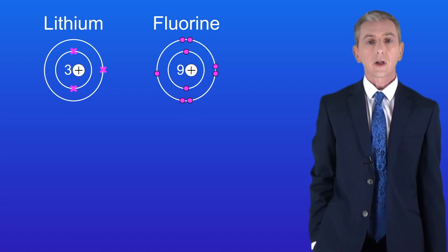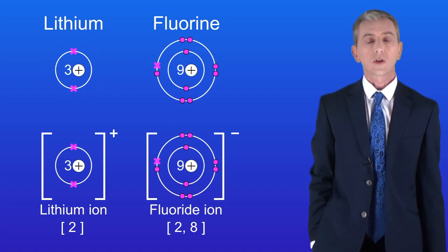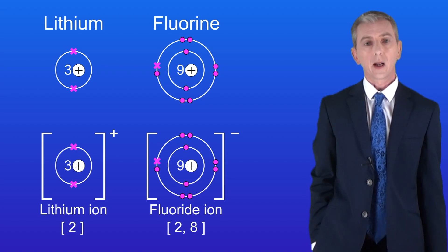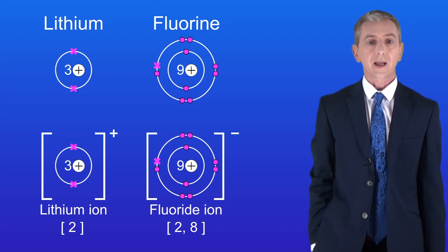We saw that the electron in the outer energy level of the lithium moves to the fluorine atom. At the end of this reaction we've produced the one positive lithium ion and the one negative fluoride ion. Both the lithium ion and the fluoride ion now have a full outer energy level, in other words the electronic structure of a noble gas.